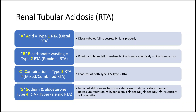C is a combination of both type 1 and type 2, and it's called type 3 RTA. S stands for sodium and aldosterone, and that's type 4 RTA, also known as hyperkalemic RTA.